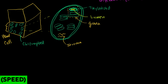Evolutionary biologists believe that organelles were once independent organisms that essentially teamed up with other organisms and started living inside their cells, so they have their own DNA. Mitochondria is another example — people believe the ancestors of mitochondria were independent organisms that teamed up with other cells. There are actually ribosomes in organelles, which supports the idea that at one point in evolutionary history, this organelle's ancestor might have been an independent organism.